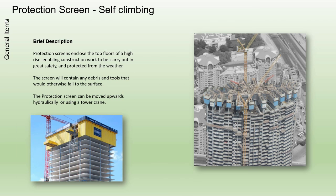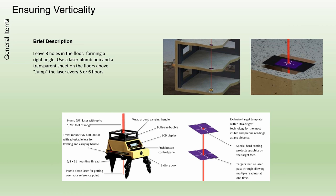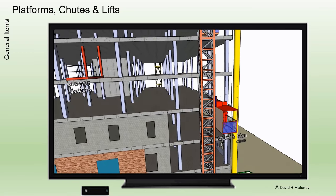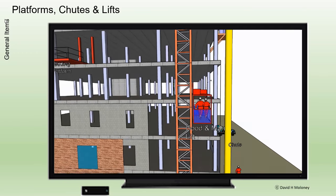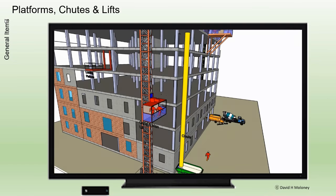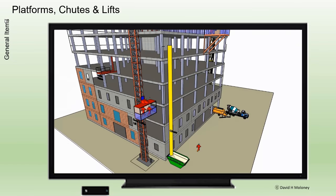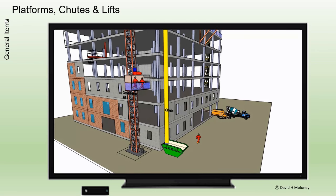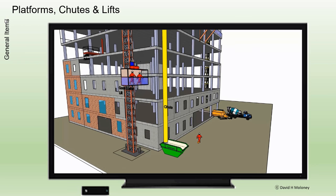Other equipment includes a protection screen, plum laser, platforms, chutes, and lifts. Cantilevered loading platforms are used to move materials on and off floors with a tower crane. Chutes are used to move waste from various floors to skips at ground level. Passenger and goods lifts are used to move workers, materials, and equipment vertically.